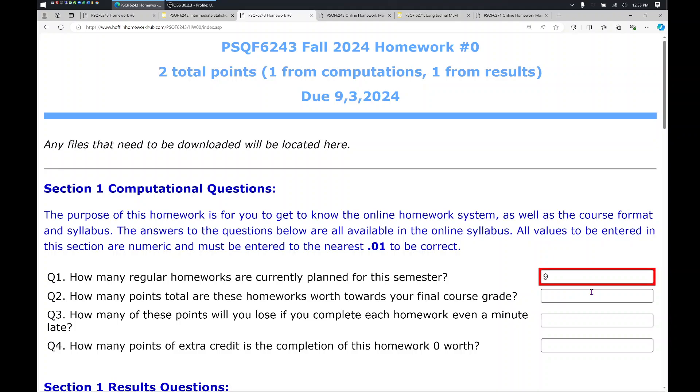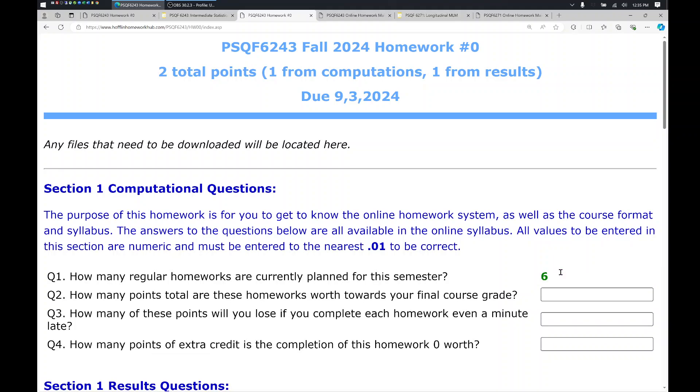I'm going to hit Enter, and then the box around it turns red. That lets you know that your answer is incorrect. The correct answer for 6243 should be 6 homework assignments. And it will be 5 for the longitudinal class. So once you have a correct answer, you will know that because it turns green and it is not editable anymore. So the system has saved it to your specific database.